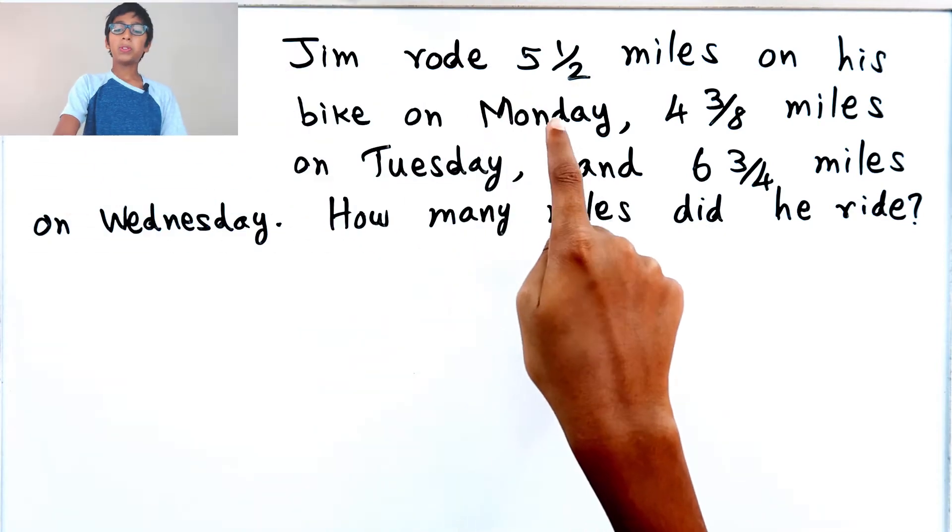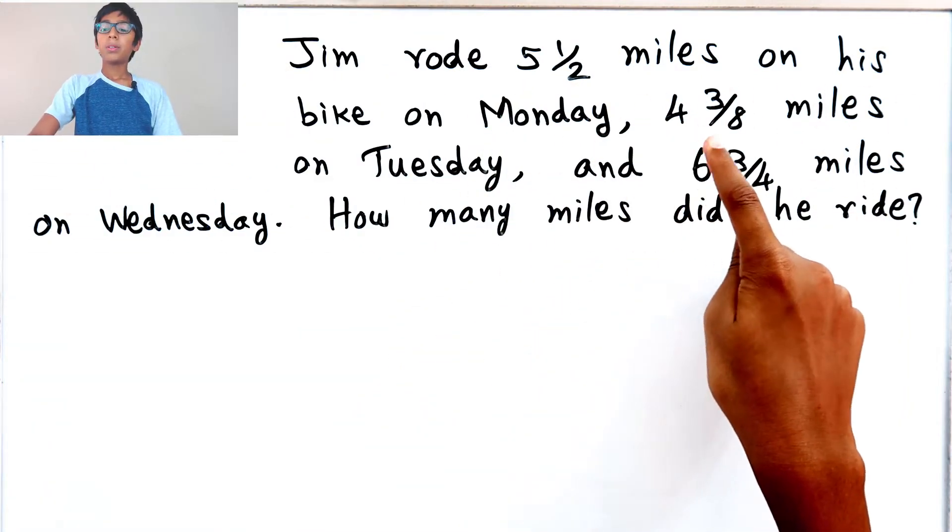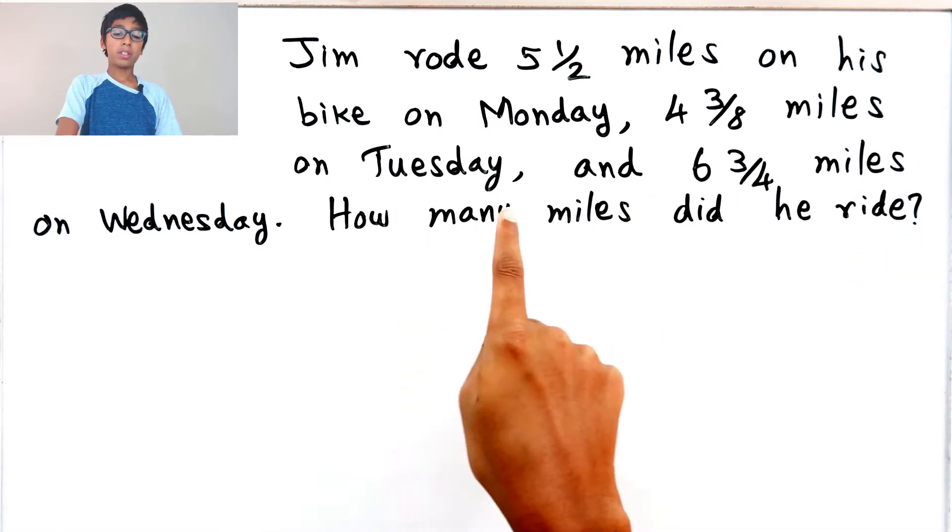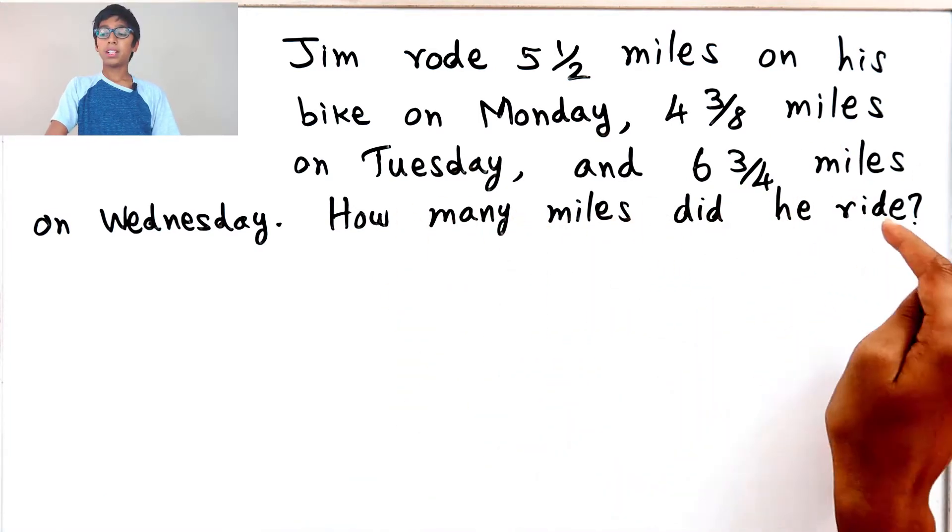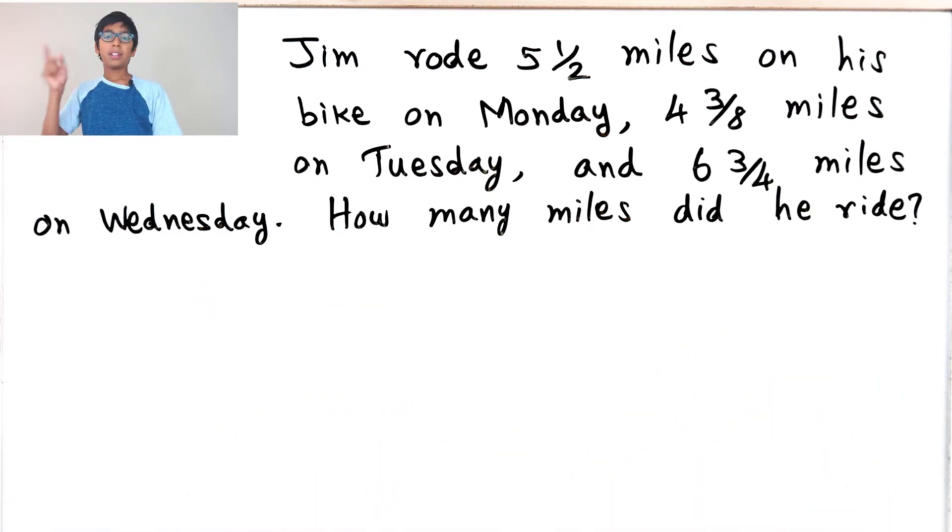The problem is Jim rode 5 1/2 miles on his bike on Monday, 4 3/8 miles on Tuesday, and 6 3/4 miles on Wednesday. How many miles did he ride? Let's find out.